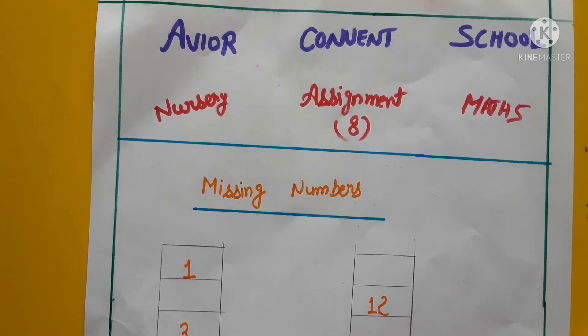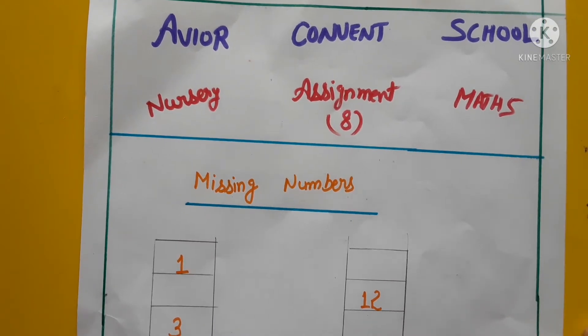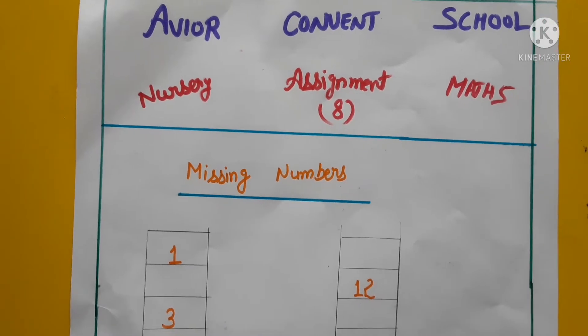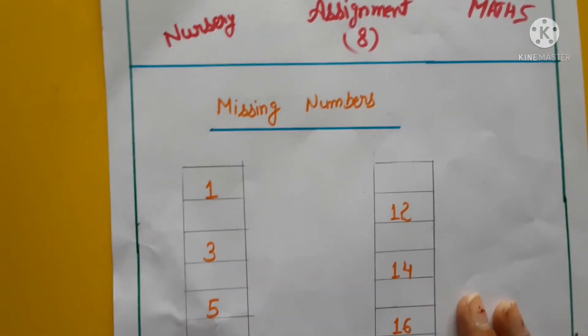Okay bachy, aaj haom kya karengi? Missing numbers, theek hai? 1 to 20 tak. Pahle haom ne kiya the na, 1 to 16 tak serial counting. Aaj haom ne missing numbers karengi hai. Okay bachy, theek hai, start karengi hai.